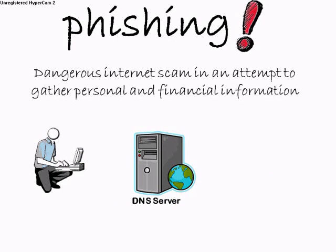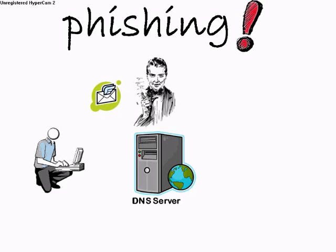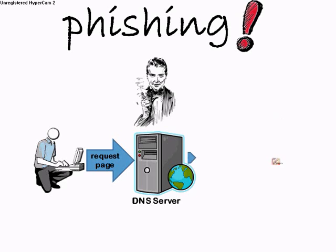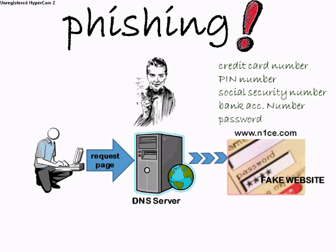Phishing is a dangerous internet scam that attempts to gather personal and financial information from an unsuspecting person. Typically, attackers bait bank customers by sending a genuine-looking email message supposedly from well-known and trustworthy websites, such as PayPal, eBay, MSN, Yahoo, and many more. The email will contain a link whereby users or victims are asked to click in order to access their account and update their information. If the victims click on the link, they will be taken to a spoofed webpage that asks for personal information including credit card numbers, personal identification numbers, social security numbers, banking numbers, and passwords. This information is then used for identity theft.